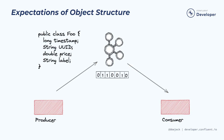Producer and consumer clients have expectations regarding the structure of the object they're working with. Take the Foo class for example. It has four fields: a long, a double, and two strings. Imagine for a moment that the development team responsible for getting the data into Kafka feels that the UUID field isn't useful anymore. They decide to update the object structure and remove the UUID field.